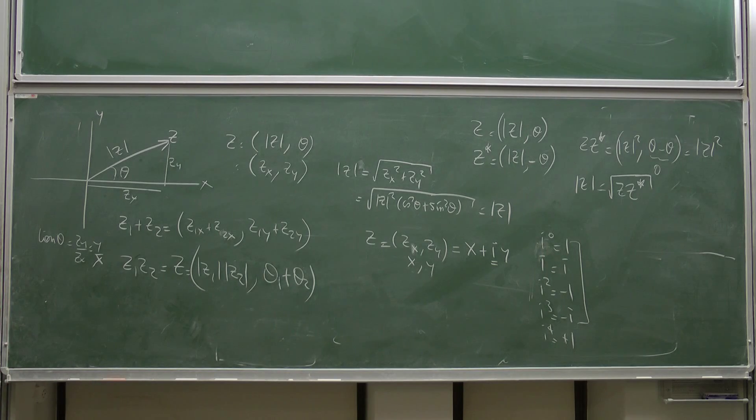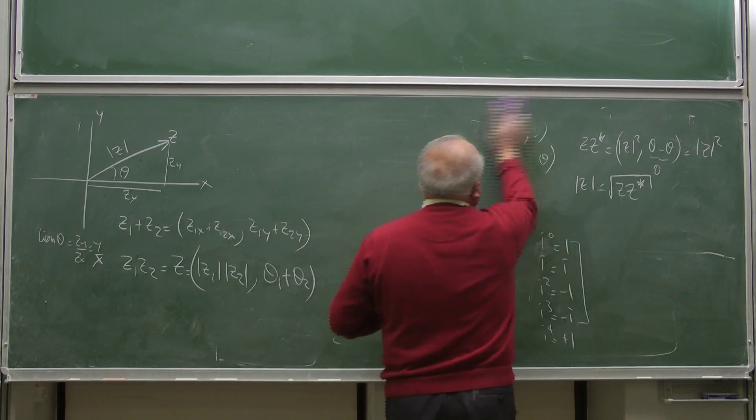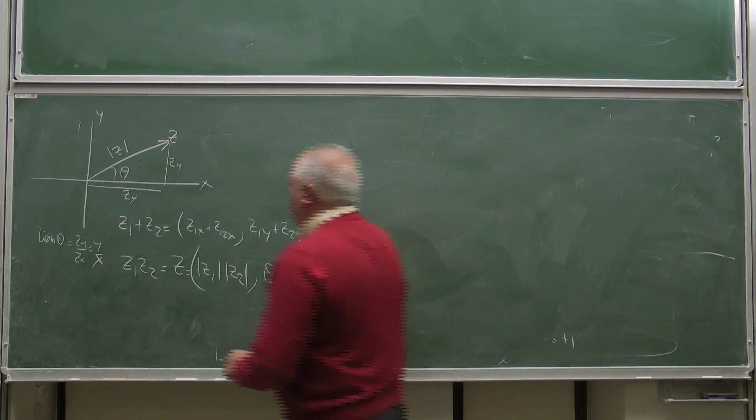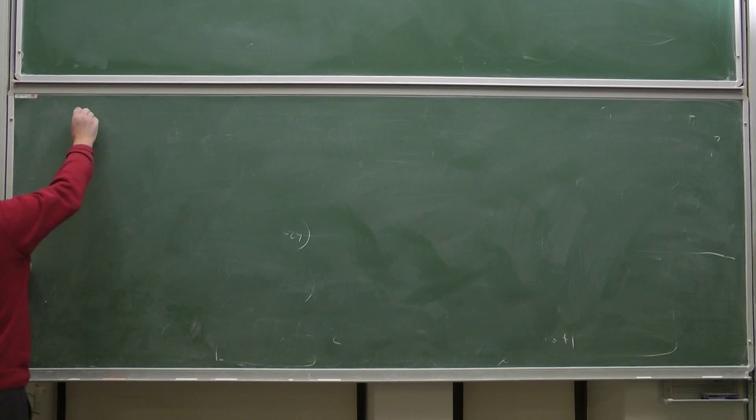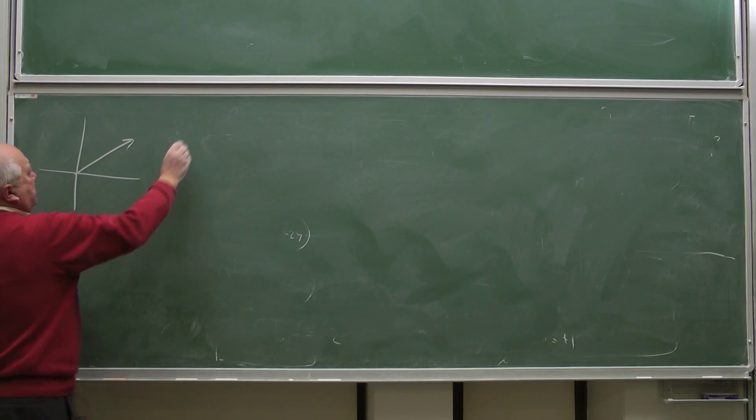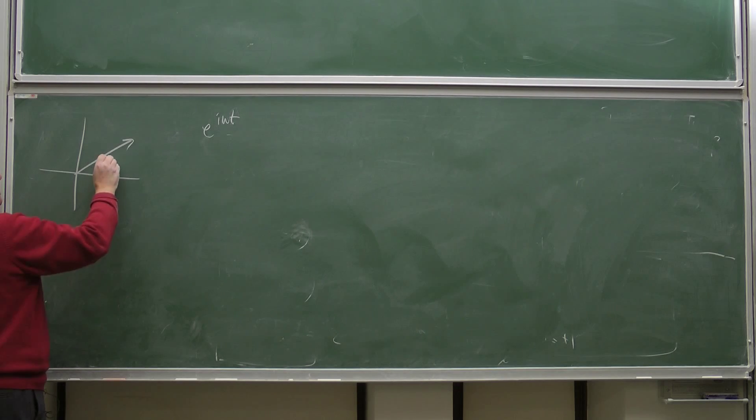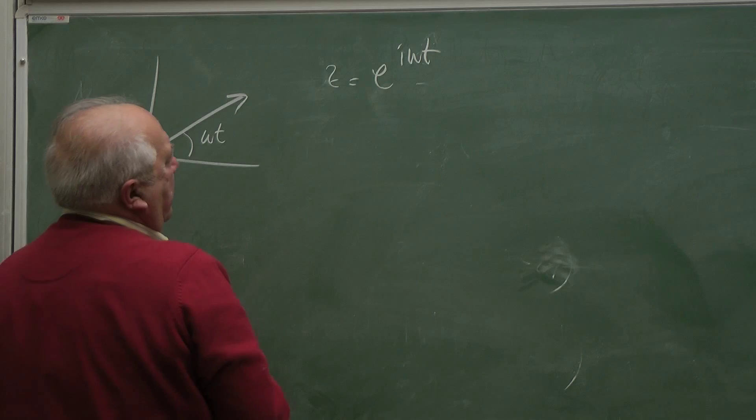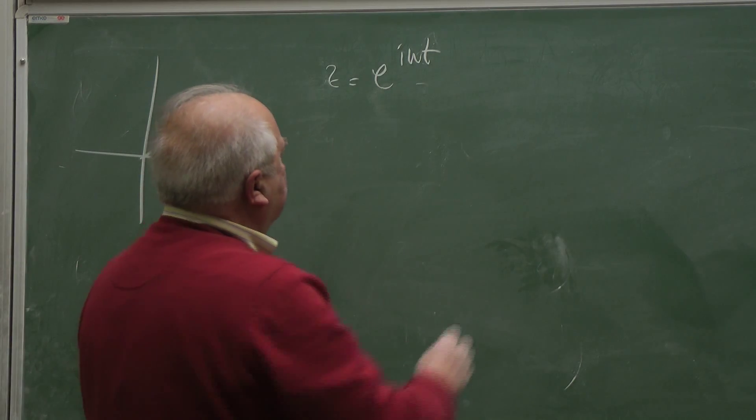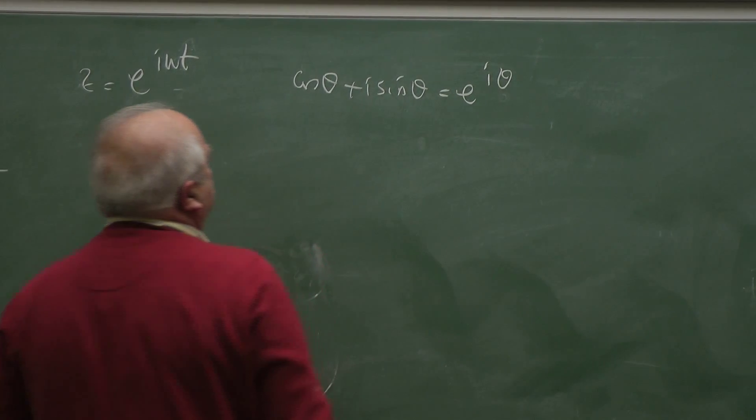Now, these are just complex numbers. I want to introduce now something very interesting, a phasor that we shall use a lot. Phasor is e to the i omega t. So this angle, phase is omega t. And the magnitude, if this is z, I should mention that cosine theta plus i sine theta can represent this e to the i theta.